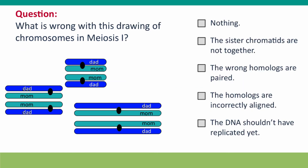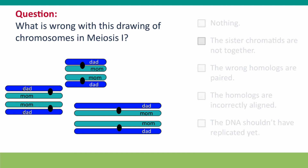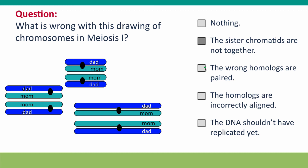Given what I've just said, what's wrong with this drawing of chromosomes in meiosis one? The answer is that the sister chromatids should be together, but they're not. The two dad sister chromatids should be together with one kinetochore, and the two mom sister chromatids should be together with one kinetochore. And that's true for all of the drawings in this picture.